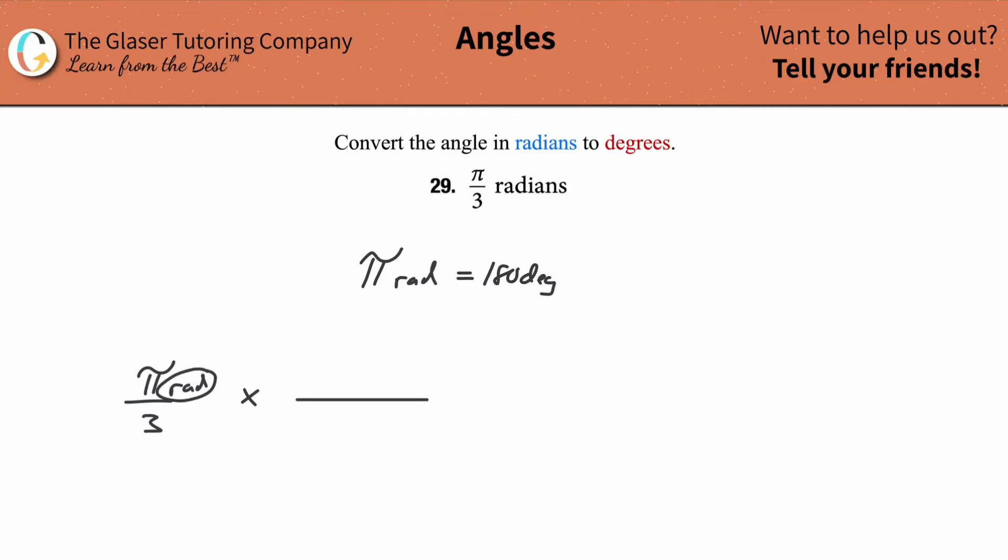Now whatever unit you're starting with here, you want to cancel that unit because you don't want your answer in radians. You want degrees at the end. And therefore this unit here of radians must cancel. So let's just delete that.